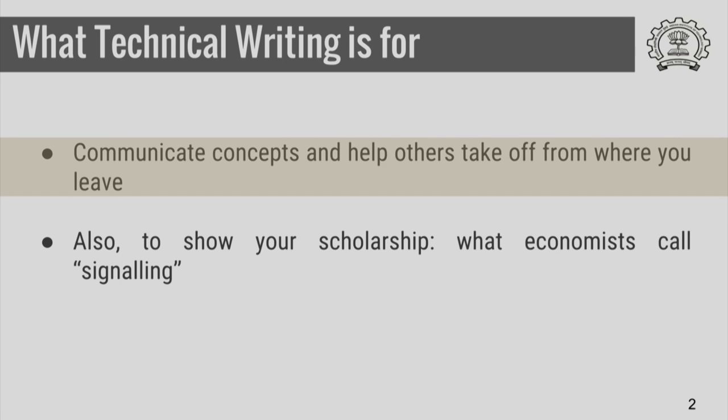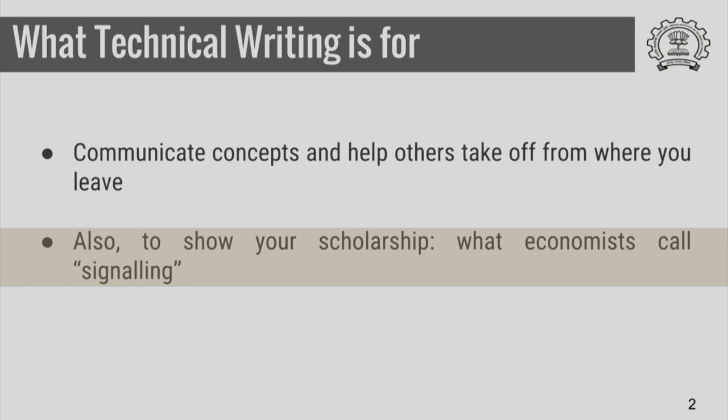Welcome. In this session we are going to discuss one of the most important aspects of technical writing in which it differs from other types of writing, namely giving references. We will discuss in detail what this is all about. Like we discussed, the fourth rule of technical writing is that it is written to communicate concepts and to help others take off from where you left. But in addition, most technical writing also has a bonus effect: to show the scholarship of the writer.